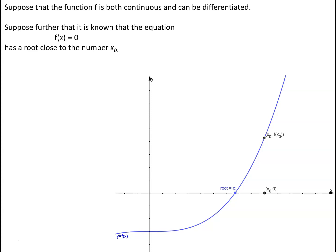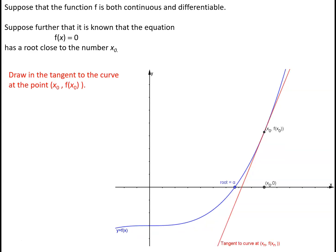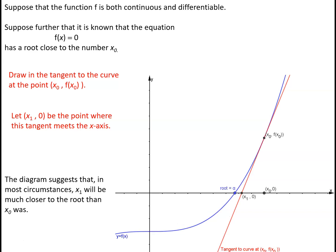The idea behind this iteration is: if we take the point x0, f(x0), which lies on the curve, and draw in the tangent to the curve at this point, and then find the point where the tangent to the curve meets the x-axis — we'll call that point x1, 0 — then as we can see in the diagram, it looks as if x1 will be much closer to the root than x0 was. It won't always be, but it will almost always be.